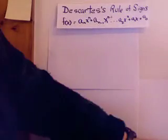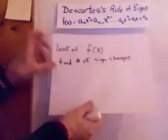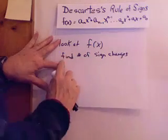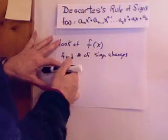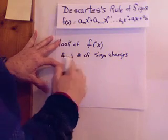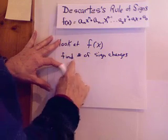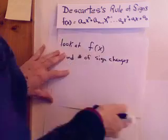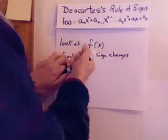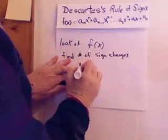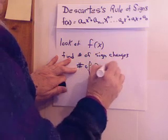You look at the signs of f(x), and you find the number of sign changes in the polynomial. And the number of sign changes of f(x) gives you the number of positive roots.